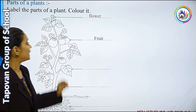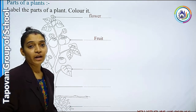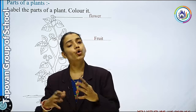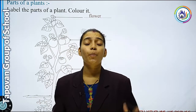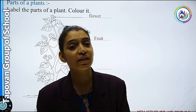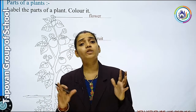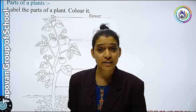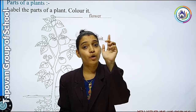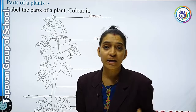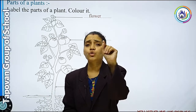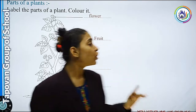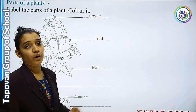Next क्या है? Leaves, यानि कि पत्ती. आप कोई भी Plant देख लो, कोई भी Tree देख लो, उसके ऊपर आपको सबसे ज़्यादा Leaves दिखने को मिलेंगी. बहुत different types की Leaves होती हैं और different sizes की — कुछ छोटे होते हैं, कुछ बड़े. जब Leaf grow करती है तो पहले छोटी होती है, फिर बड़ी बनती है. तो हमारा next part है Leaves — L-E-A-F.